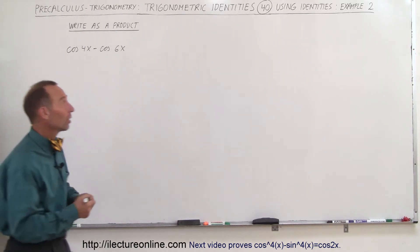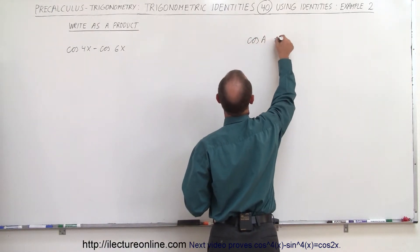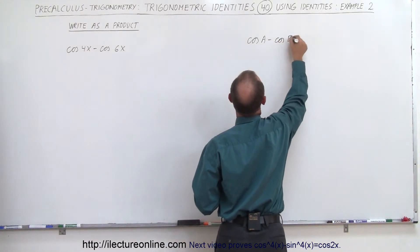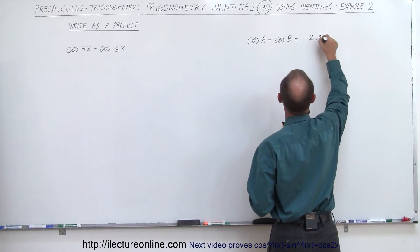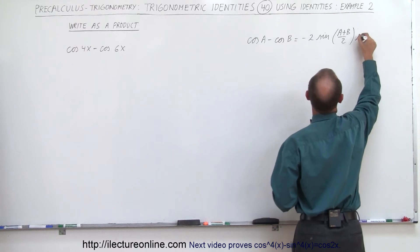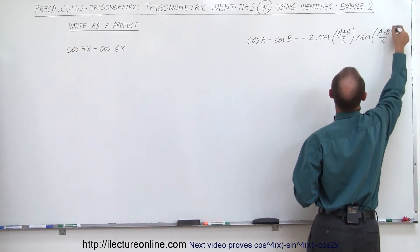To do that, we need the general equation. We have cosine of one angle minus cosine of the second angle. That's equal to minus 2 times the sine of a plus b divided by 2, times the sine of a minus b divided by 2.